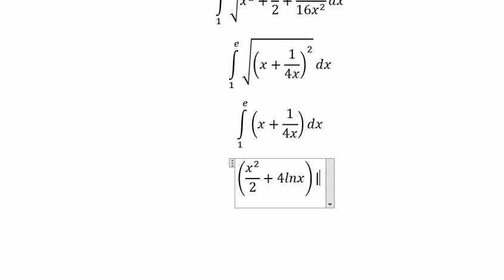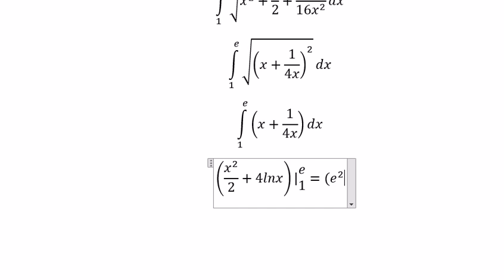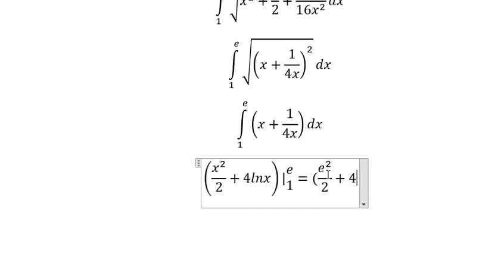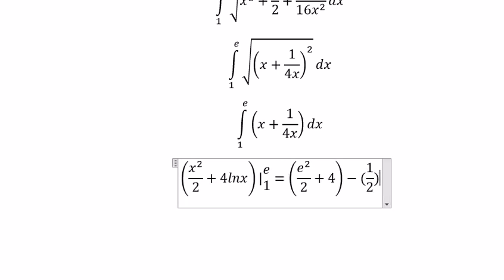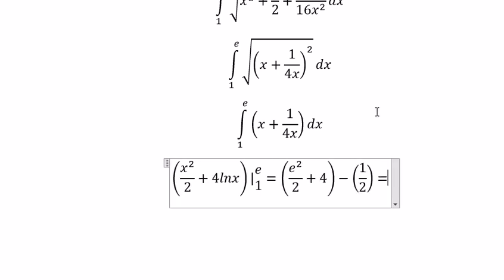And we have the boundaries in here from 1 to e. So we get about x squared over 2 plus 1 over 4 natural log of x, evaluated from 1 to e. So we get about e squared over 2 plus 4 minus 1 over 2, which equals e squared over 2.